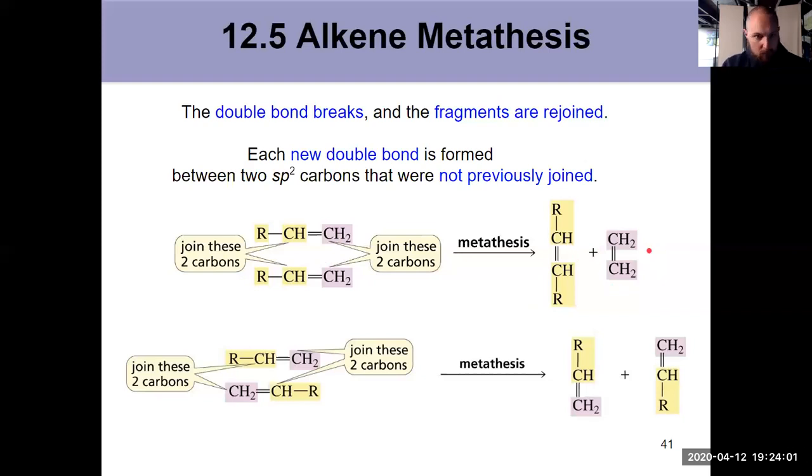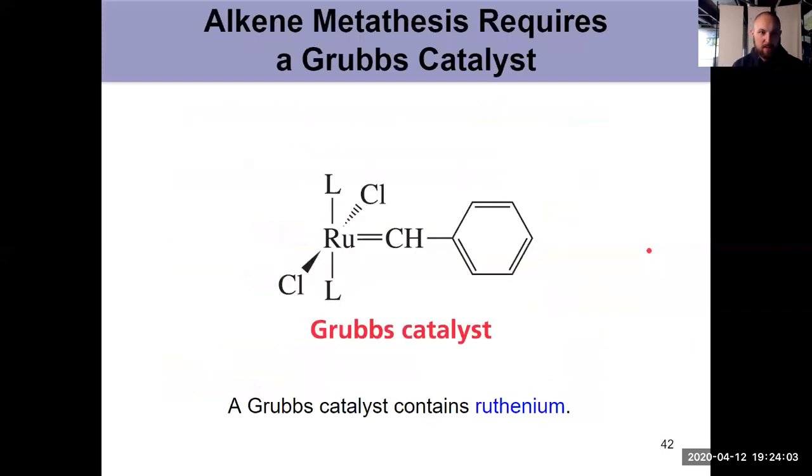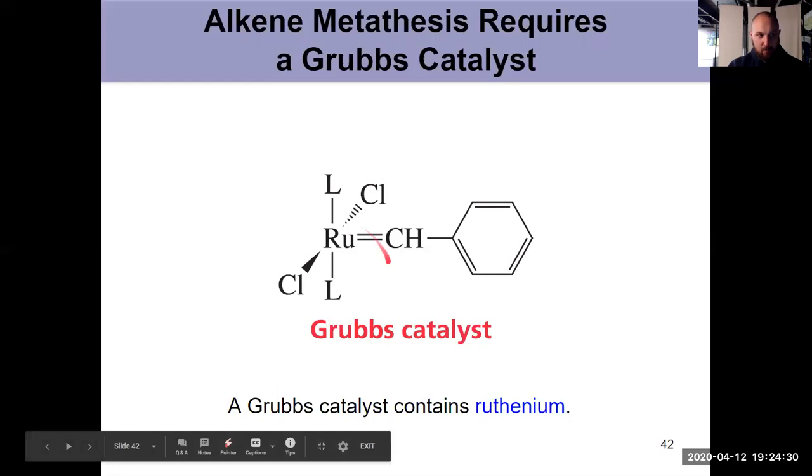So how does it get done? As I mentioned before, with a catalyst. For alkene metathesis, we use something that's known as a Grubbs catalyst, which contains ruthenium, hence its role in the organometallic chapter. Notice the general ligands over here. There are a couple different generations of the Grubbs catalyst, changing the ligands to control its reactivity and improve it overall. But you should be familiar with the fact that Grubbs catalysts contain ruthenium.